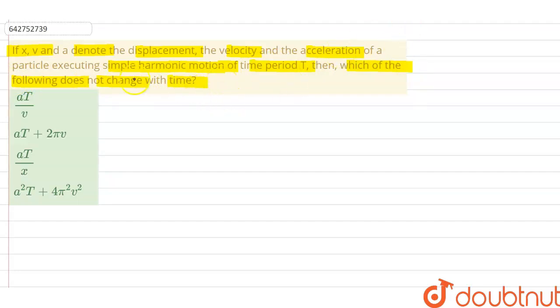So if we talk about the first option, aT upon v. So a is the acceleration and acceleration is written as x omega square times T, divided by velocity. And velocity is denoted by, velocity is written as aT, the formula is a into omega.